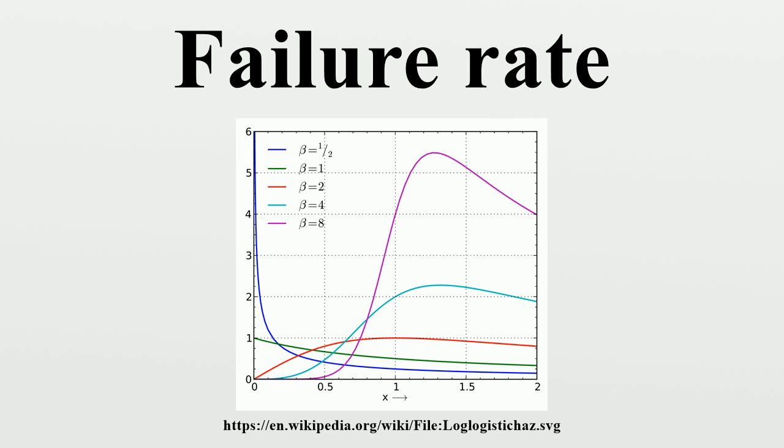Although the failure rate is often thought of as the probability that a failure occurs in a specified interval given no failure before time, it is not actually a probability because it can exceed one. Erroneous expression of the failure rate in percent could result in incorrect perception of the measure, especially if it would be measured from repairable systems and multiple systems with non-constant failure rates or different operation times.